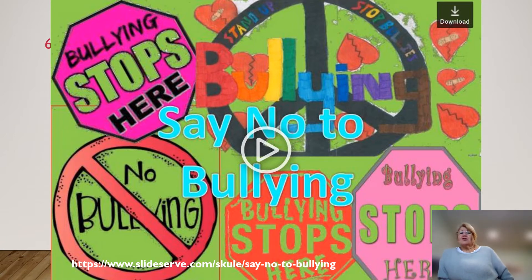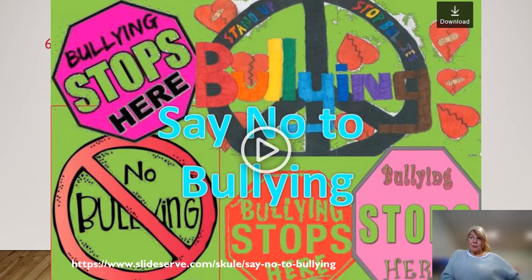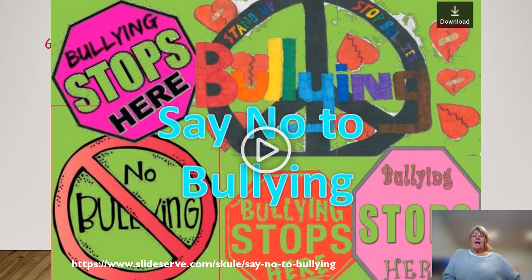Another form of relationship that impacts negatively on our mental health are those relationships that are involved in bullying. There are some really helpful CPD modules online from the Anti-Bullying Alliance — which is actually one of our takeaways, with a link at the end of this group of videos. The module on bullying and mental health tells us that children who are bullied are 30% more likely to experience depression later in life — quite a massive statistic.